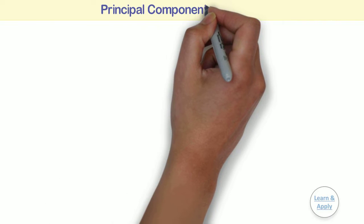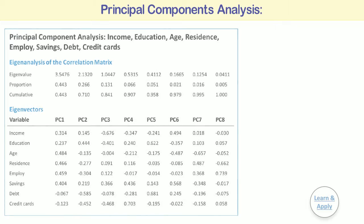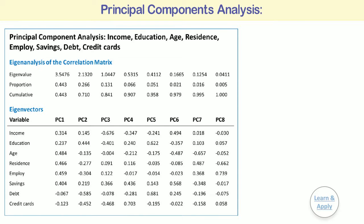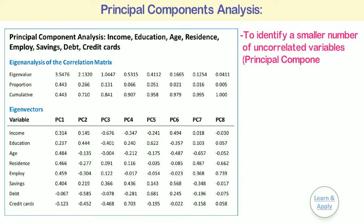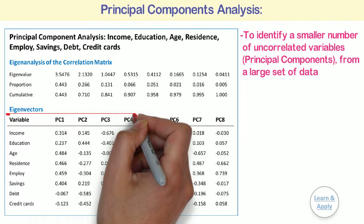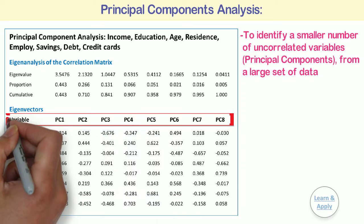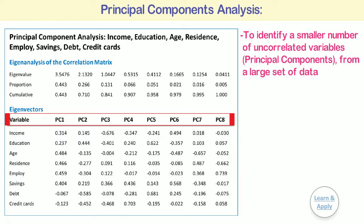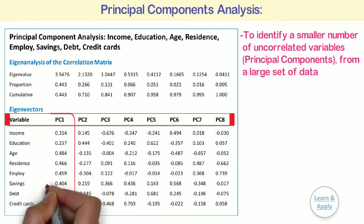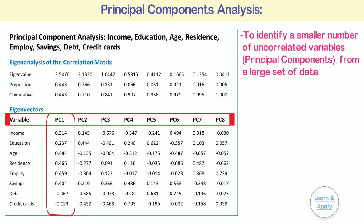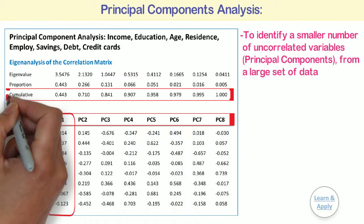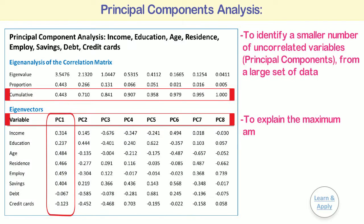Principal Component Analysis. The principal component analysis is used to identify a smaller number of uncorrelated variables, also called principal components, from a large set of data. With this analysis, you create new variables, also called principal components, that are linear combinations of the observed variables. The goal of principal component analysis is to explain the maximum amount of variance with the fewest number of principal components.